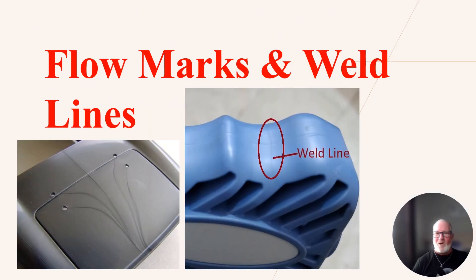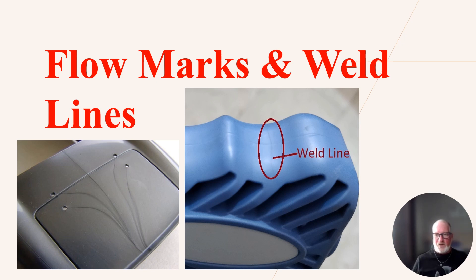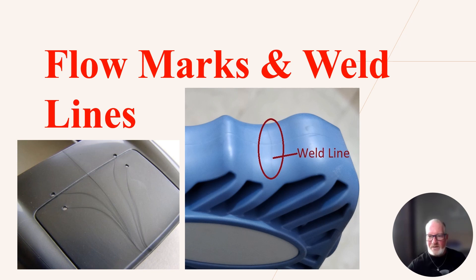So flow marks and weld lines look like this. What happens is the material is flowing along and it hits something like a boss, or an area where the material has to flow around. That's what causes the flow lines or the weld line. You can actually see it on the parts — it'll be like a little line, or where the material flows on the other side and creates a flow line or a knit.